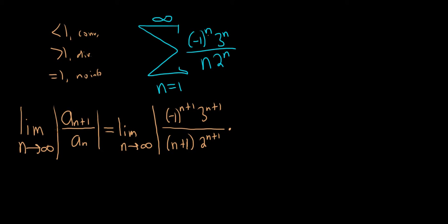And then we're dividing by a sub n, so instead of dividing, we'll multiply by the reciprocal. So we have n times 2 to the n over, and then negative 1 to the n times 3 to the n.